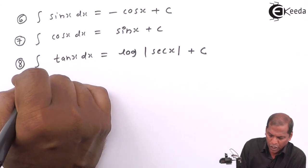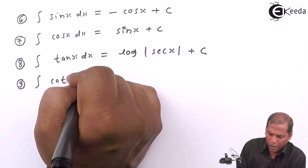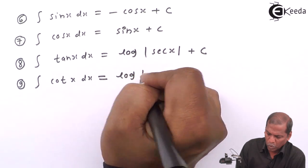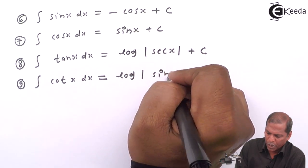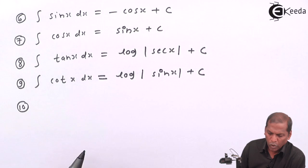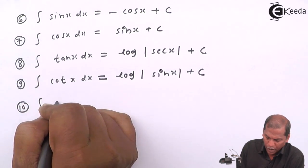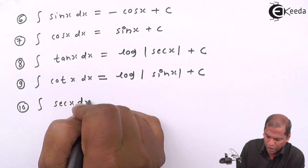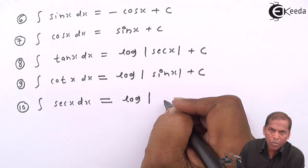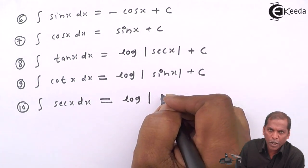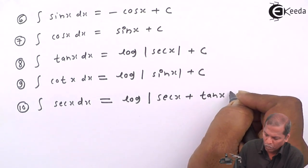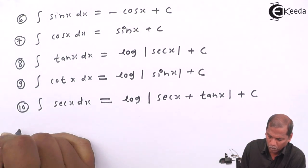Ninth formula: integral cot x dx is equal to log mod sin x plus c. Tenth formula: integral sec x dx is equal to log mod sec x plus tan x plus c.